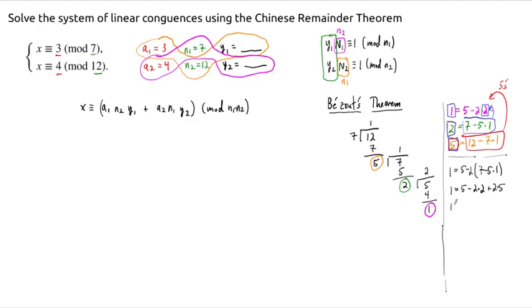And of course, these two 5s can get grouped together. So now we have 1 is equal to 3 times 5 minus 2 times 7. That's a typo here. This was a 7.